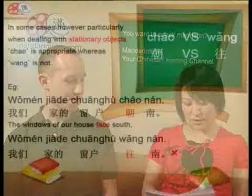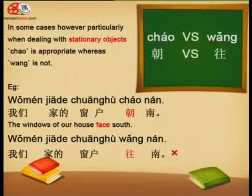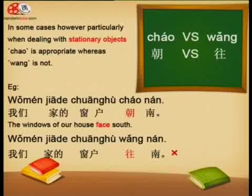There is one difference: when referring especially to stationary objects, 朝 can also mean 'to face,' whereas 往 cannot. For example: 我们家的窗户朝南 — The windows of our house face south. The house is obviously a stationary object, and the windows on it face south. You couldn't say 我们家的窗户往南 — that would be incorrect, because 往 cannot be used to mean 'to face.' Your house is an inanimate object and cannot walk.